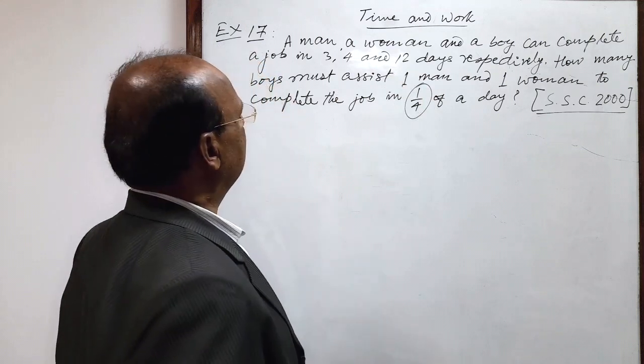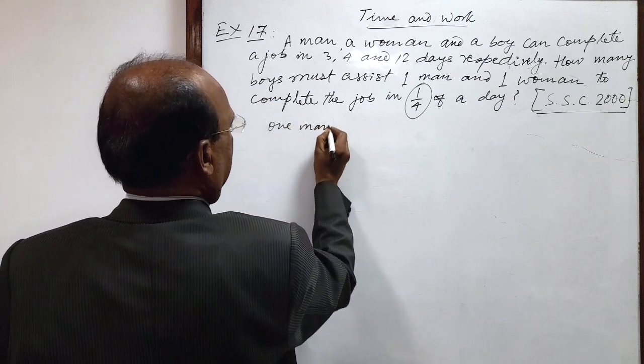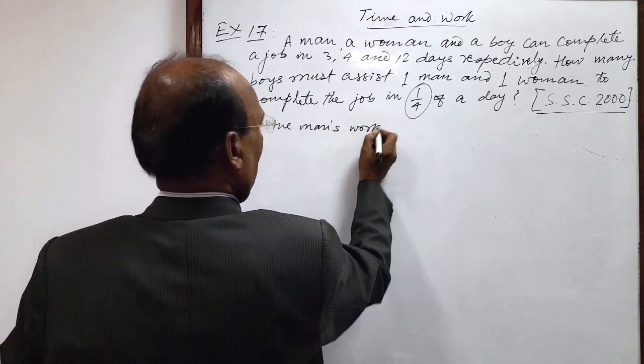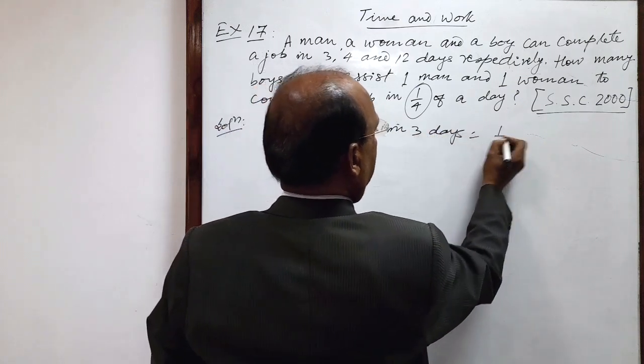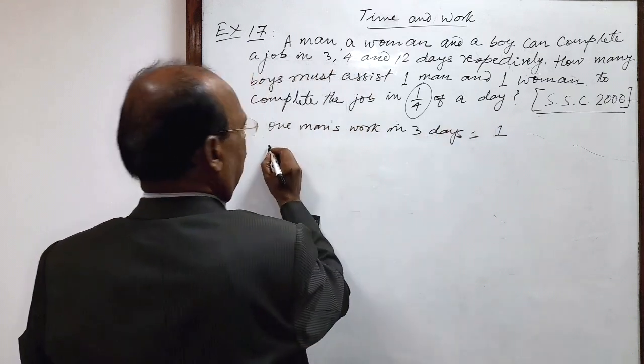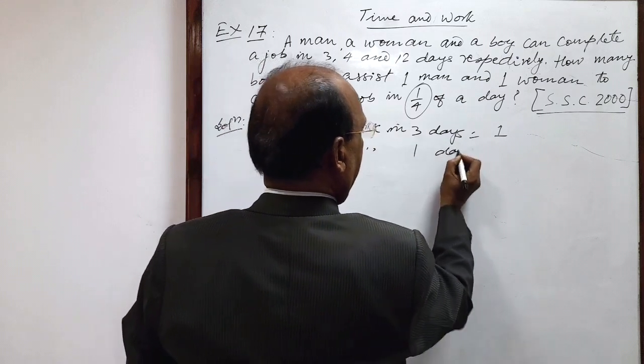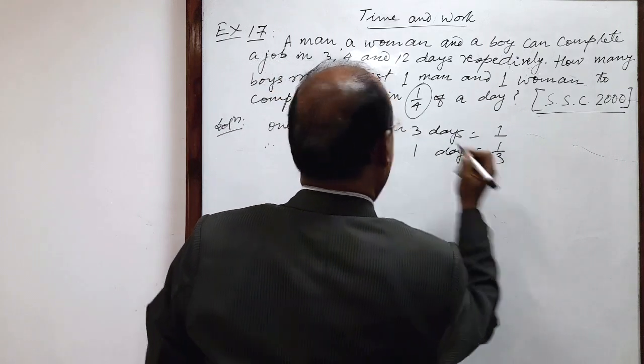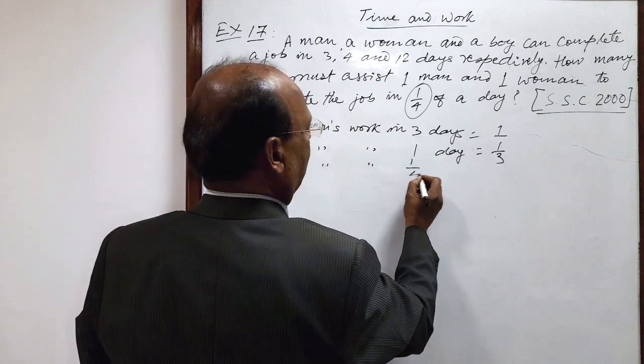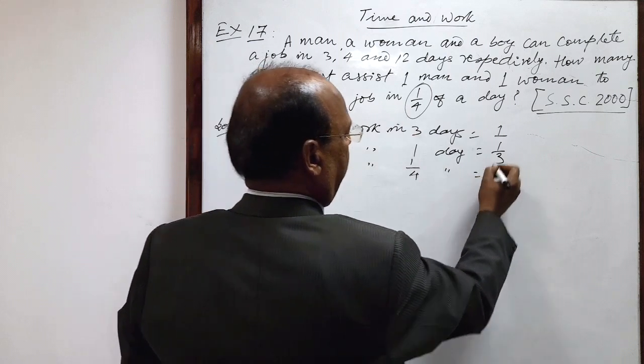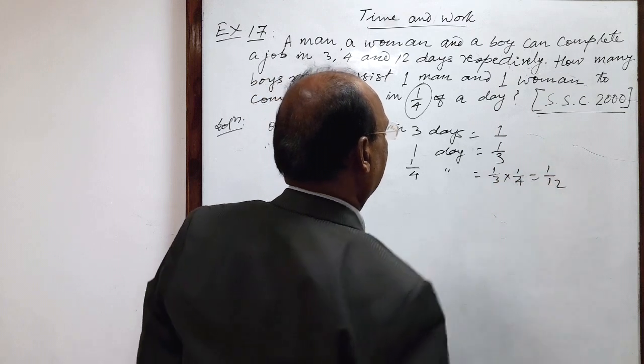We will approach with the help of unitary method. So one man's work in 3 days is 1. So therefore, one man's work in 1 day is 1 by 3 and 1 man's work in 1 by 4th of the day is 1 by 3 into 1 by 4, this is equal to 1 by 12.